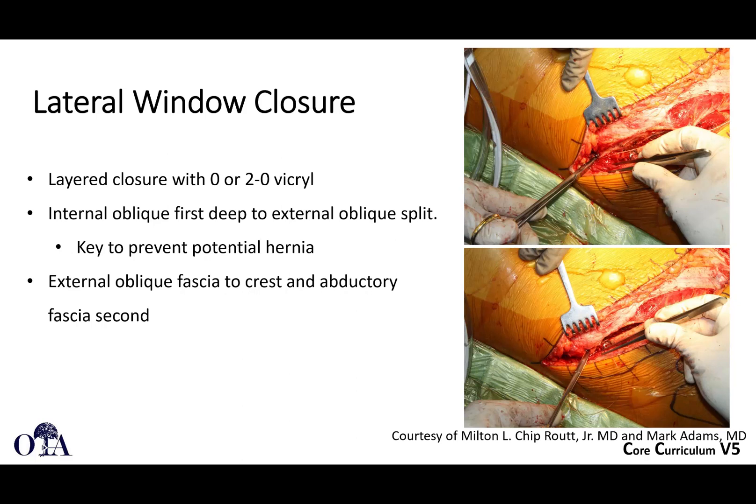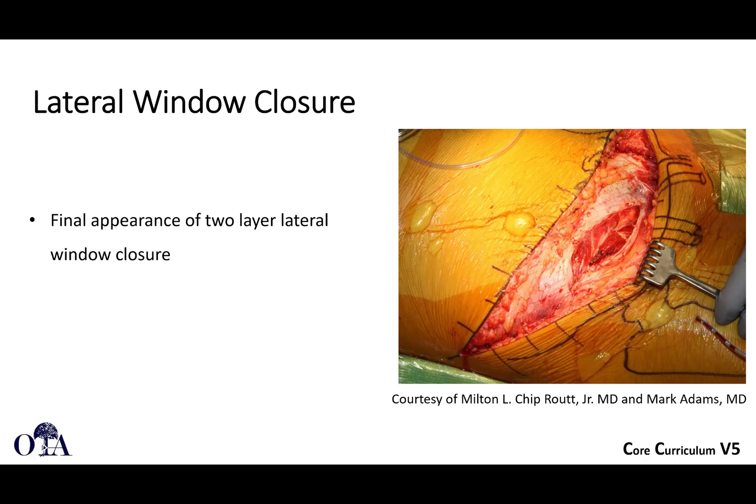As you close the lateral window, it's a layered closure. You're going to do the internal abdominal oblique first, and then repair the external abdominal oblique back to the crest. Sometimes you have to grab a little bit of tissue over the tensor origin if you're having a hard time getting the repair. It should come together relatively anatomically.